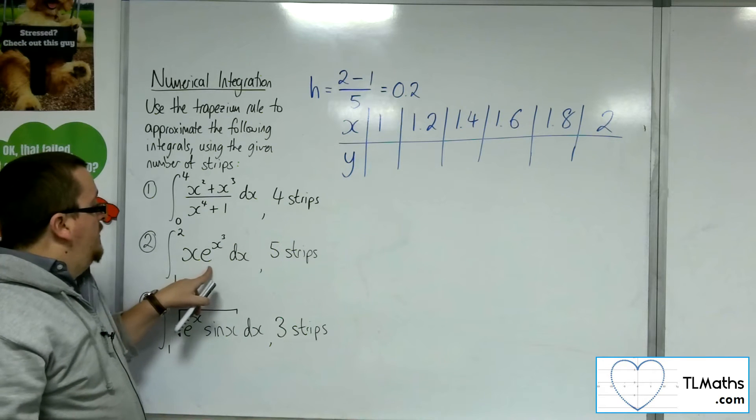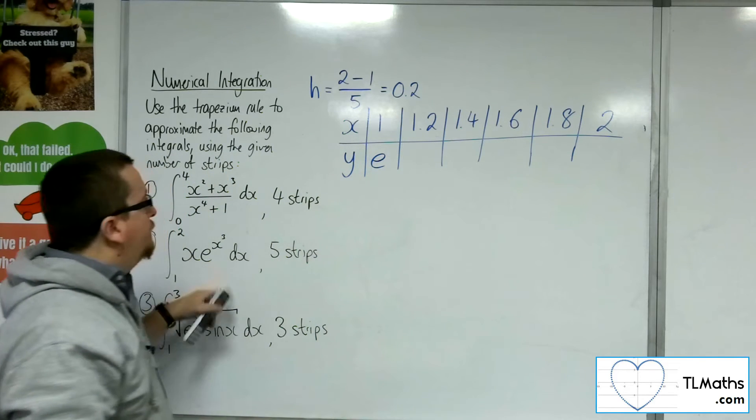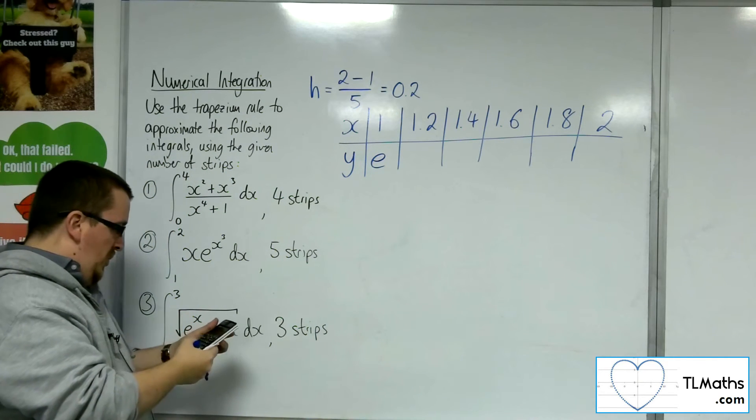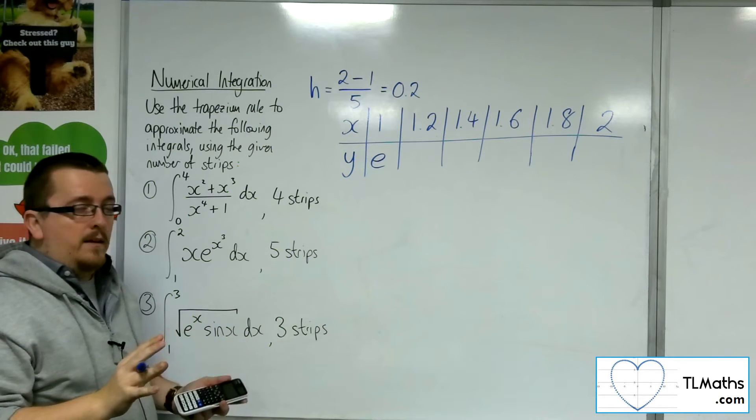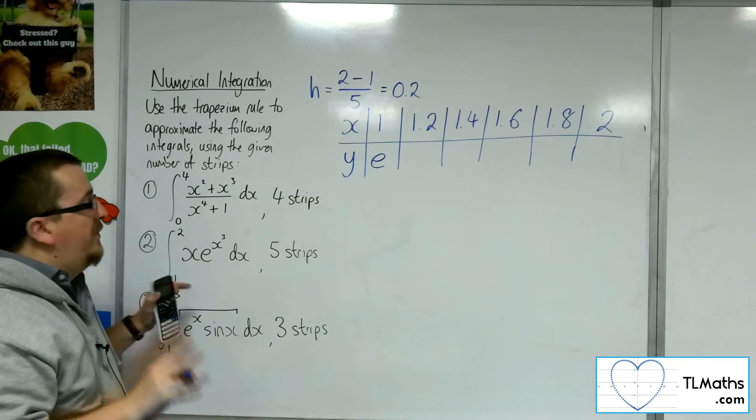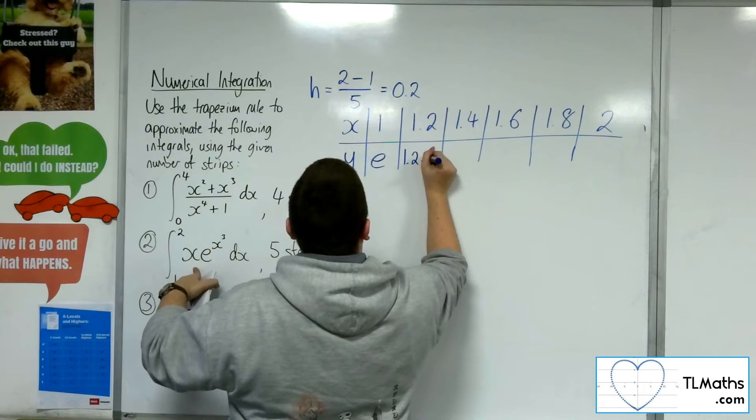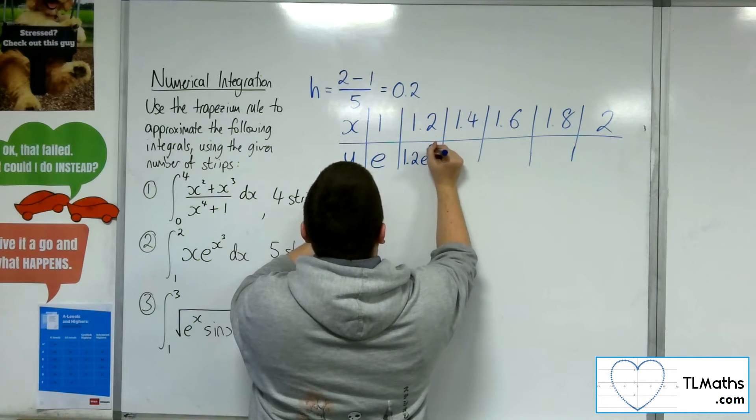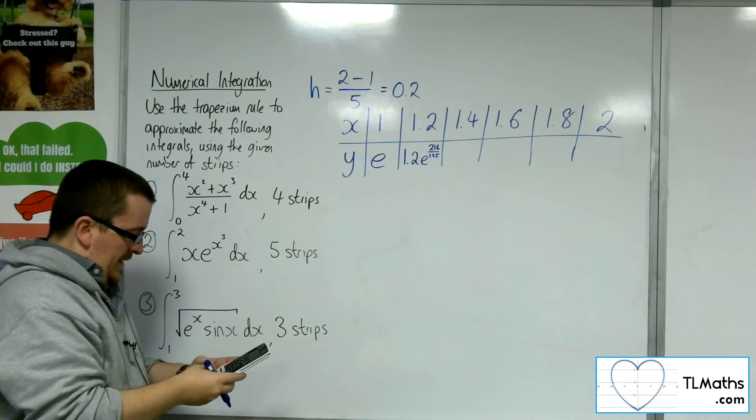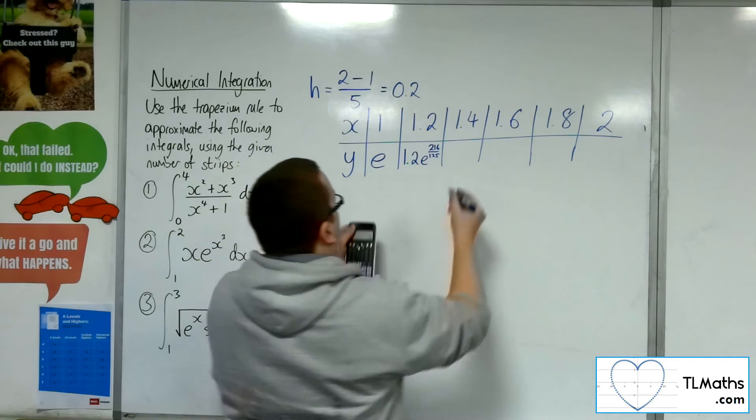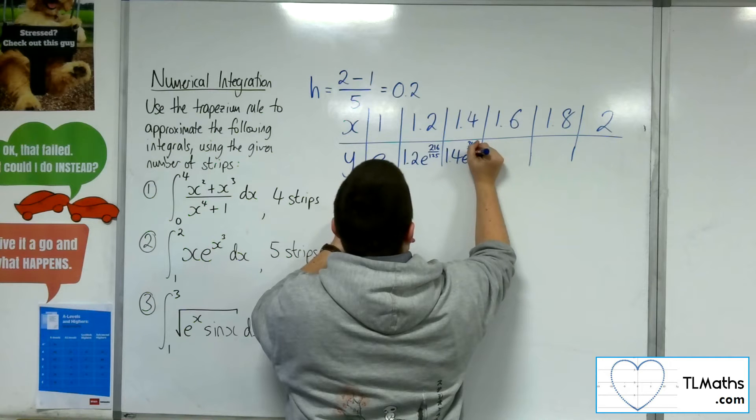So if I substitute in 1, I'm going to get 1 times e to the 1 cubed. So that's just e to the 1. Substitute in 1.2. So I probably want to try and keep them as exact form. So we're going to get 1.2 e to the 216 over 125.